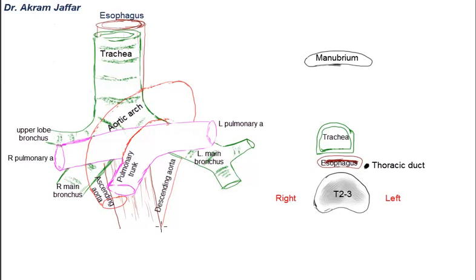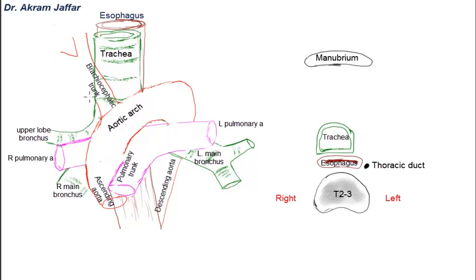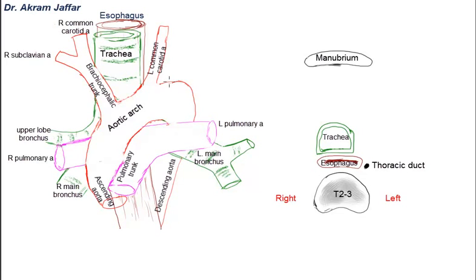The descending thoracic aorta lies here, and notice that in the lower part of the thorax, the esophagus comes to lie a little bit anterior to the descending thoracic aorta, which leaves the thorax by passing behind the diaphragm at the level of T12. The ascending aorta has two branches — the right and left coronary arteries — and the arch of the aorta usually has three branches: the first is the brachiocephalic trunk, which divides into the right subclavian artery and the right common carotid artery.